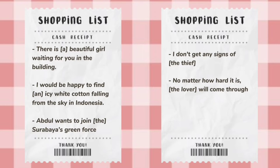'No matter how hard it is, the lover will come through.' Kata el, en, dan de, ini disebut attributive use, karena bisa dipasangkan dengan siapa saja, apa saja, ataupun yang tidak diketahui entitasnya. Tidak hanya sebatas itu, attributive use bisa menjadi frasa seperti 'the thief' and 'the lover'. Sedangkan referential use merujuk pada entitas lain yang pembicara sudah memahami artinya. Contohnya: beautiful girl, I see white cotton falling from the sky, and Surabaya's Green Force.